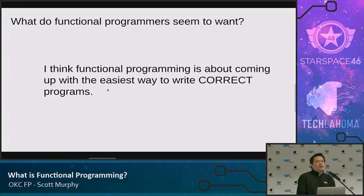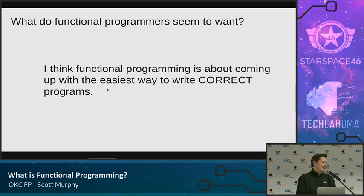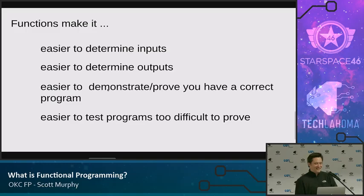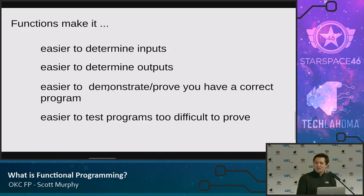He said transparency in your code — and I think that's a really big thing. Being able not just to have a correct program, but to make it so that everybody can tell that it is right. Those two things are very important. Functions make it easier to determine inputs and outputs — that's actually in the definition of a function. And in addition to that, it makes it easy to see what your code is doing. I have an example coming up to show that.